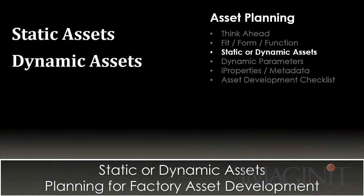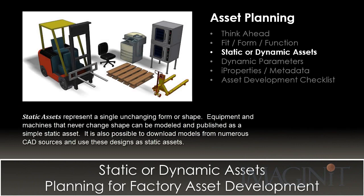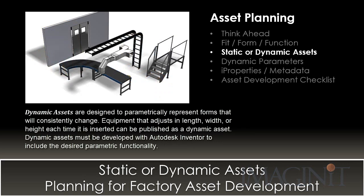There are really two types of assets: static assets and dynamic assets. Static assets represent a single unchanging form or shape — equipment and machines that never change shape can be modeled and published as simple static assets. It's also possible to download models from numerous CAD sources like GrabCAD and use these designs as static assets. Dynamic assets are designed to parametrically represent forms that will consistently change. Equipment that adjusts in length, width, or height each time it's inserted can be published as a dynamic asset, and dynamic assets must be developed within Autodesk Inventor to include the desired parametric functionality.